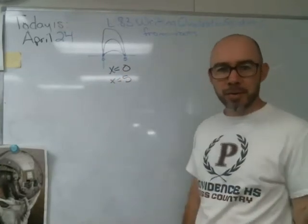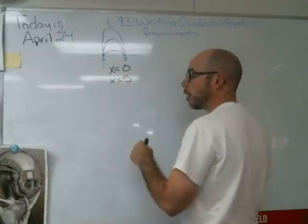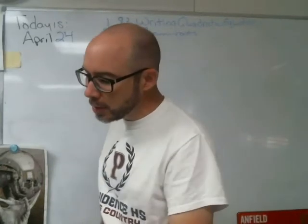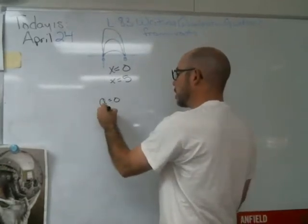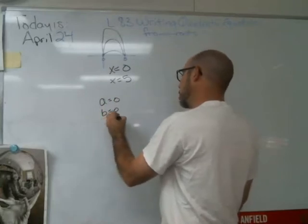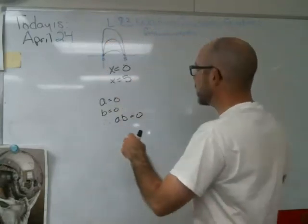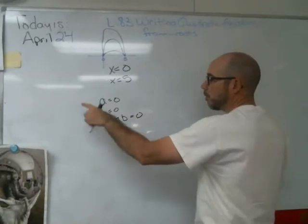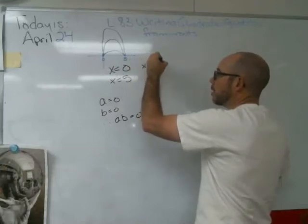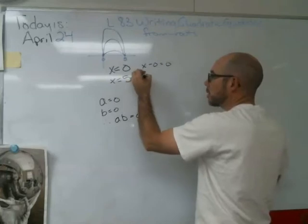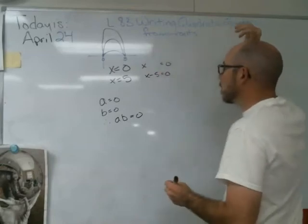How do I come up with a quadratic equation from that? I'm going to work this whole process backwards. There's a rule called the converse of the zero product property: if a equals 0 and b equals 0, then a times b equals 0. Instead of solving for roots, we move them over and turn them into factors. So x equals 0 becomes x minus 0, and x equals 5 becomes x minus 5.